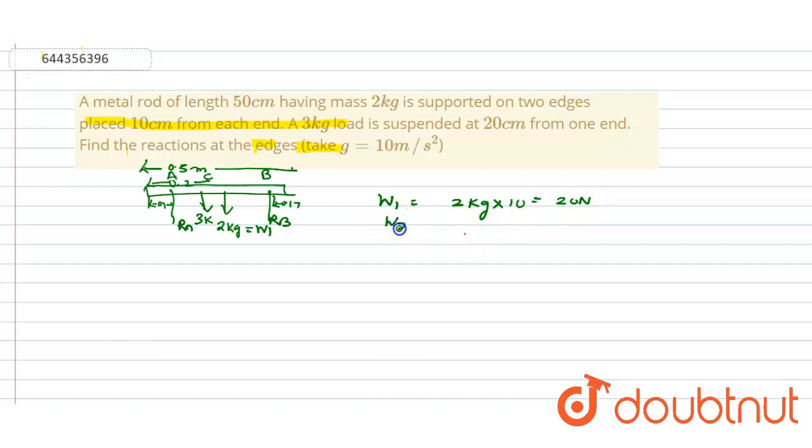Now we'll write the equation: the reaction RA plus RB minus W1 minus W2 is equal to 0.